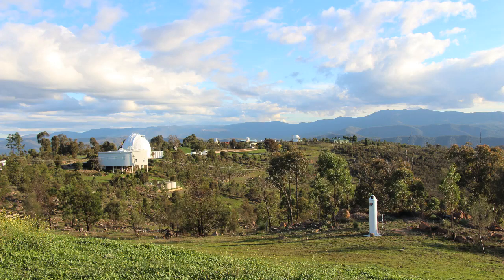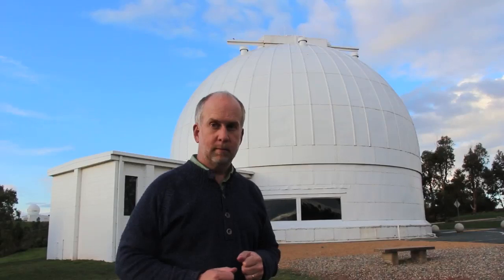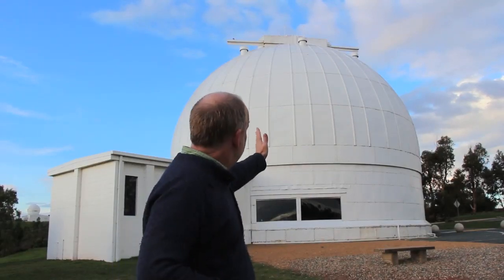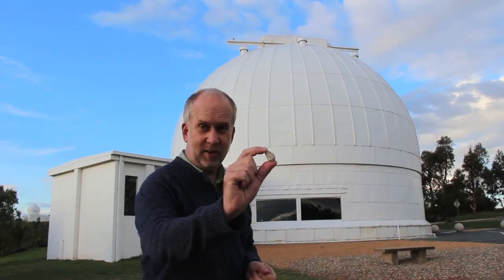Perhaps an analogy will help drive home just how small this is. Here is a view of Mount Stromlo. If we assume that a normal star, like our own sun, is the size of the entire mountain, then a white dwarf is the size of the dome of the 74-inch telescope over here. So if that dome is the size of a white dwarf, a neutron star on that scale is about the size of this pebble.